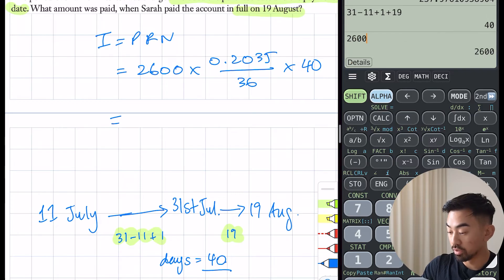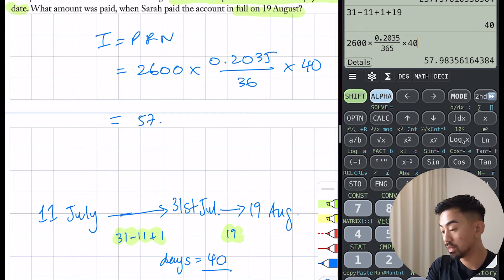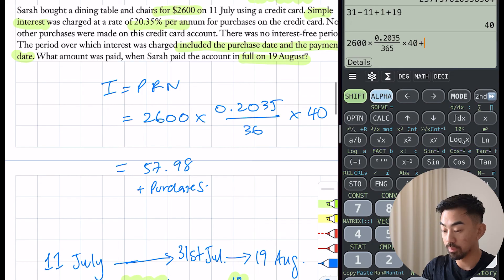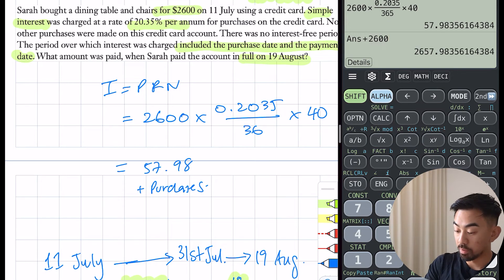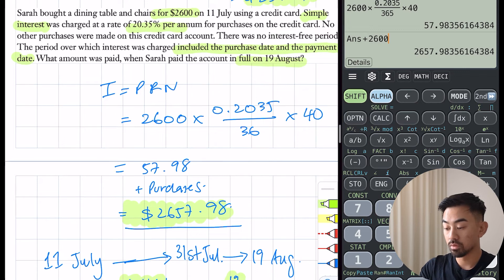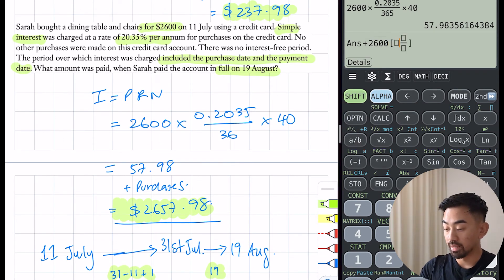Let me put this number back in here, so 40 at the top. What's my total interest paid? It's going to be 2600 times 0.2035 over 365 times 40, so $57.98. I need to plus my purchases, so I'm adding on 2600. My final answer is $2657.98. Just be careful of that one extra day.